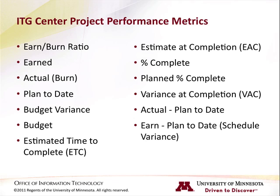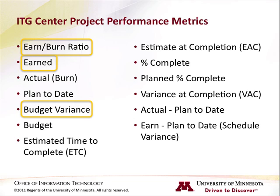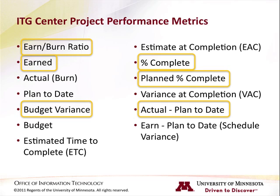There are seven metrics that show the current state of a project at a given point in time. They are: earned-burn ratio, earned, budget variance, percent complete, planned percent complete, actual minus plan to date, and earned minus plan to date.